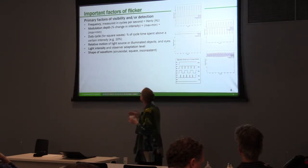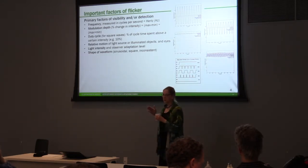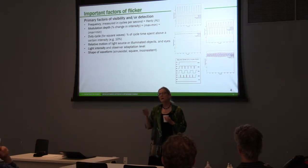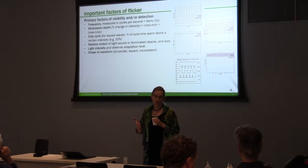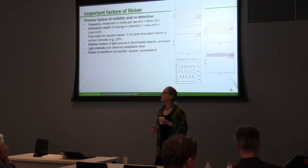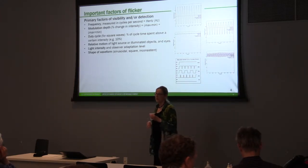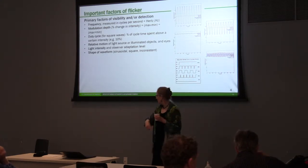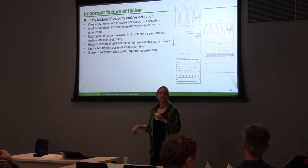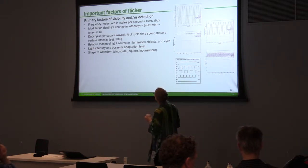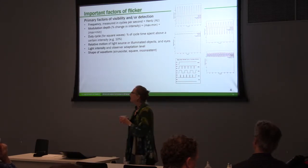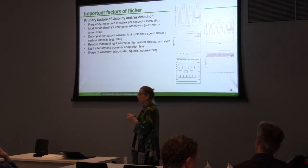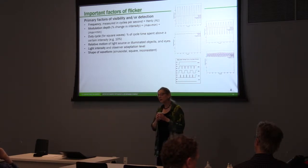Frequency is measured in cycles per second. The most common frequency of flicker we're going to see in the United States is twice the mains frequency. The mains frequency is 60 Hz in this country, so you double that — you're going to see 120 Hz. Modulation depth is how much the light output is changing from maximum to minimum divided by the maximum plus the minimum.